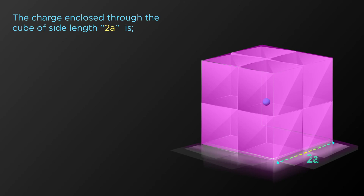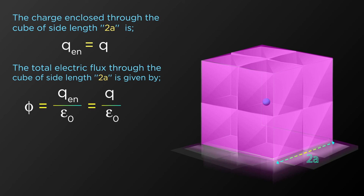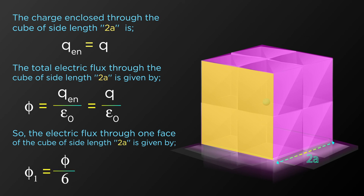Since the charge enclosed by the cube of side length 2A is Q_enclosed = Q, by Gauss's law the total electric flux through this cube is Φ = Q / ε₀. Since a cube has six faces, the electric flux through one face of the cube of side length 2A is Φ₁ = Φ / 6 = Q / (6ε₀).